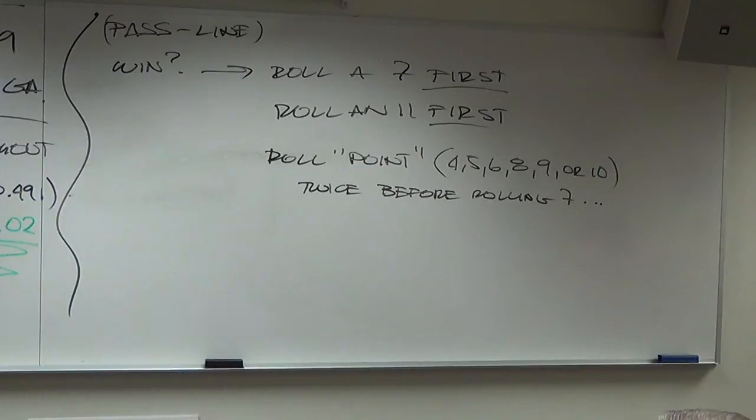The snake eyes only matters on the first roll. Boxcars only matters on the first roll. Eleven only matters on the first roll. Three only matters on the first roll. If you roll it any other time, it's a wasted roll. The roll gets thrown away. Does that make sense?